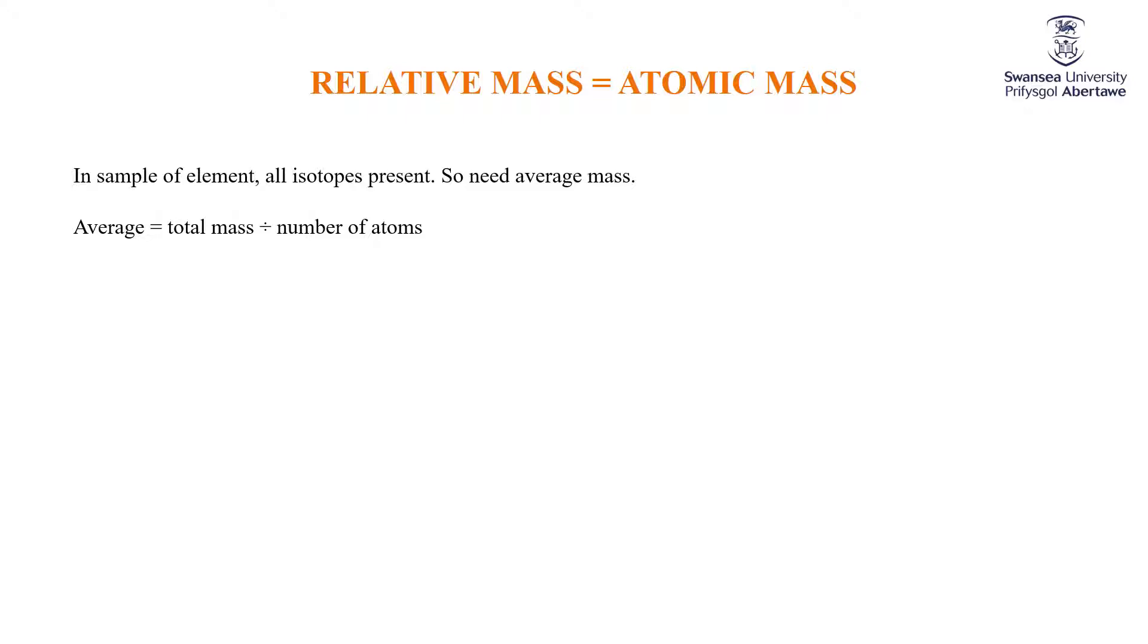Now, the average is, of course, the total mass divided by the number of atoms. But it's not a simple average of the isotopes. The average mass of chlorine is not the average of 35 and 37. It's not 36 because you're going to have different numbers of atoms weighing 35 to those that weigh 37. So we talk about a weighted average. A weighted average is this little funny squiggle sign, which just means sum up the mass of an isotope times the fraction of atoms that are that isotope.